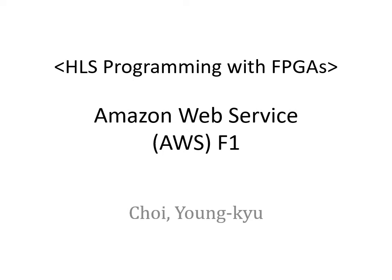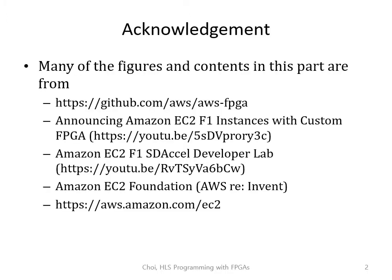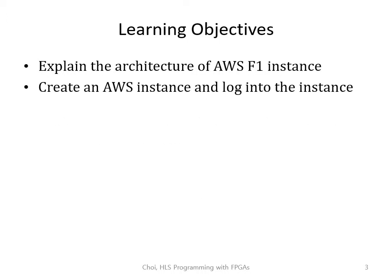Welcome back to the second part of the lecture. Today we're going to learn how to use Amazon Web Service for our HLS and FPGA experiment. Before I begin, I'd like to mention that many of the figures and contents in this part of the lecture are from documents provided by AWS and Xilinx. Today's learning objective is to be able to explain the architecture of AWS F1 instance and also be able to create and log into an AWS instance.